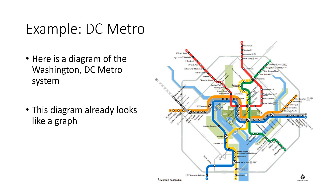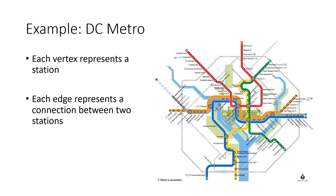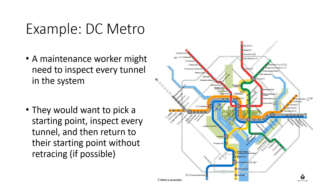Here's an example: this map of the Washington DC Metro subway system already looks like a graph — you can see the dots representing stations and the connections between them. Every vertex represents a train station where you can get on, off, or transfer, and every edge represents a connection between two stations. Some vertices have multiple connections; for example, two dots connected by both a blue and a yellow line mean two different train lines run between those stations. If we work for the DC Metro, our job might be to inspect the tunnels, walking up and down them and returning to our starting point without retracing our steps — though that may not always be possible.